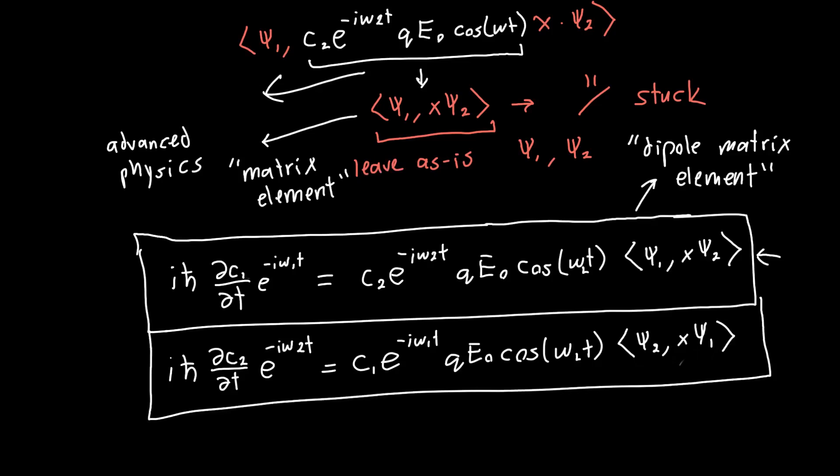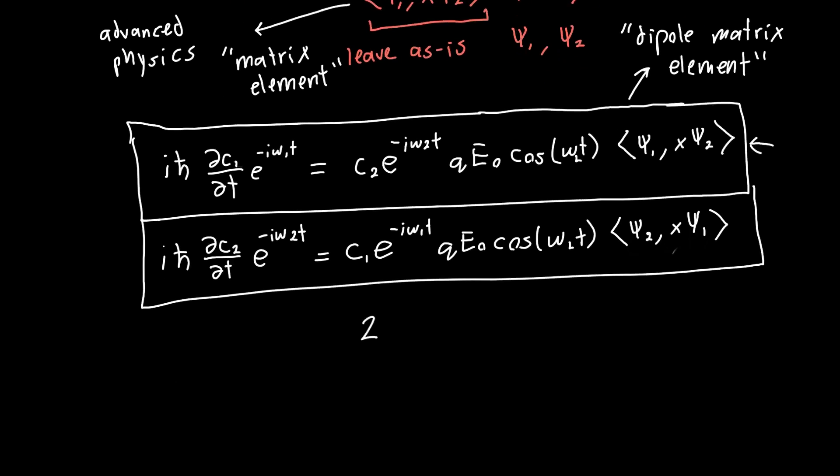We've now got two equations, two equations. If you are willing to believe that we can figure out a value for this matrix element, that it's just some function of maybe omega light, but let's assume that this is known, then we've got two equations and two unknowns. Our unknowns are c1 and c2. These are specifically differential equations. In order to solve them, we need a set of initial values.